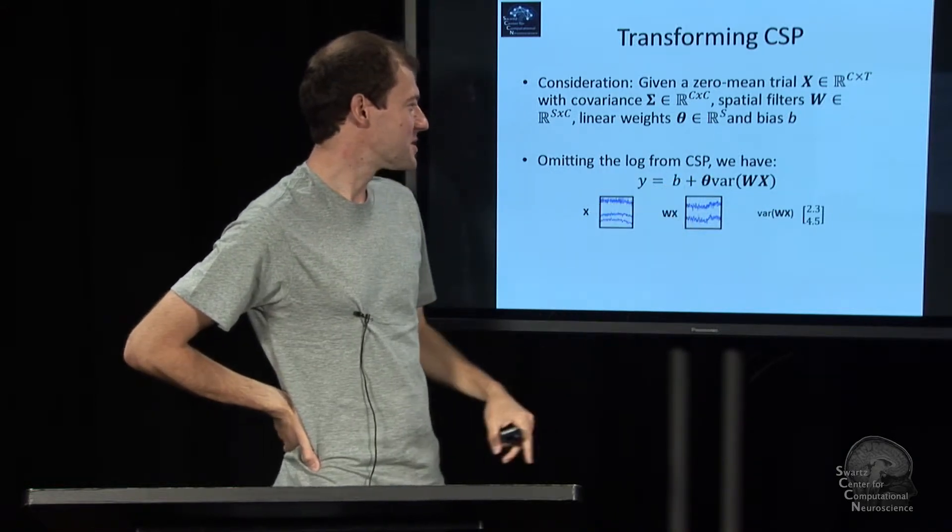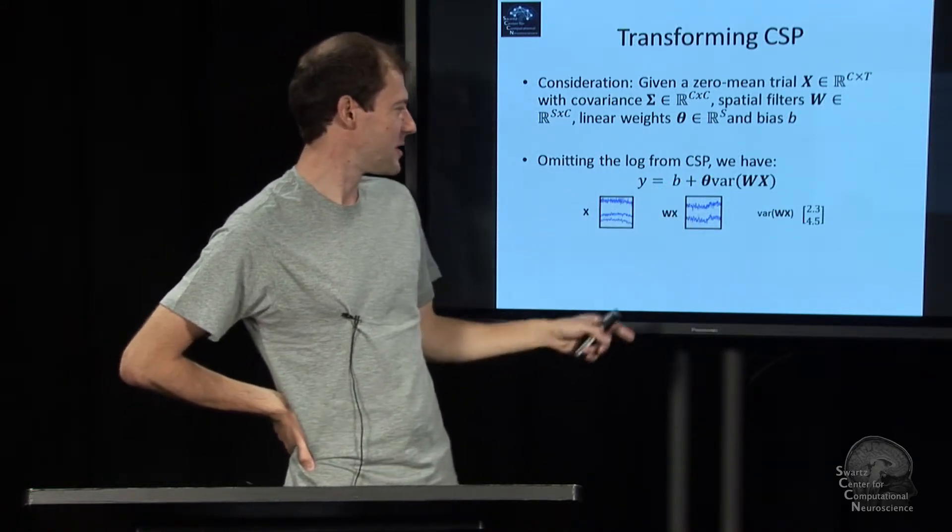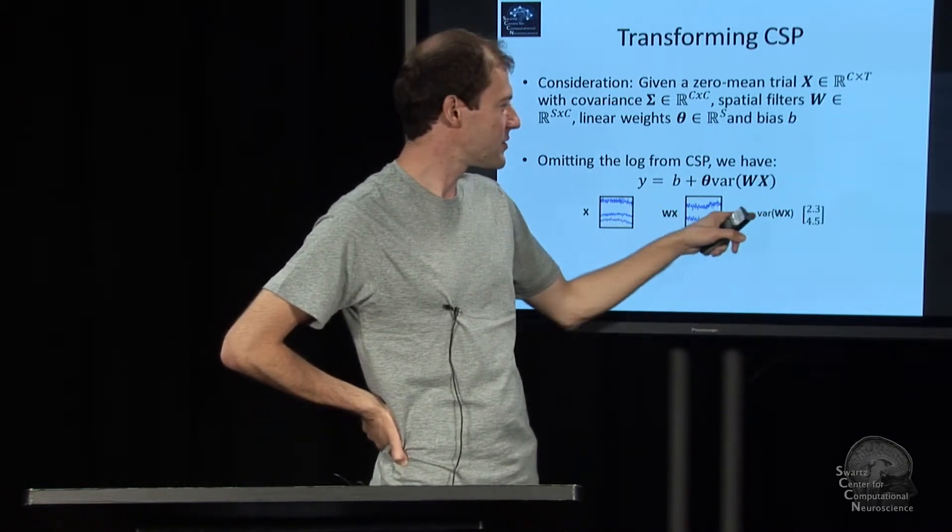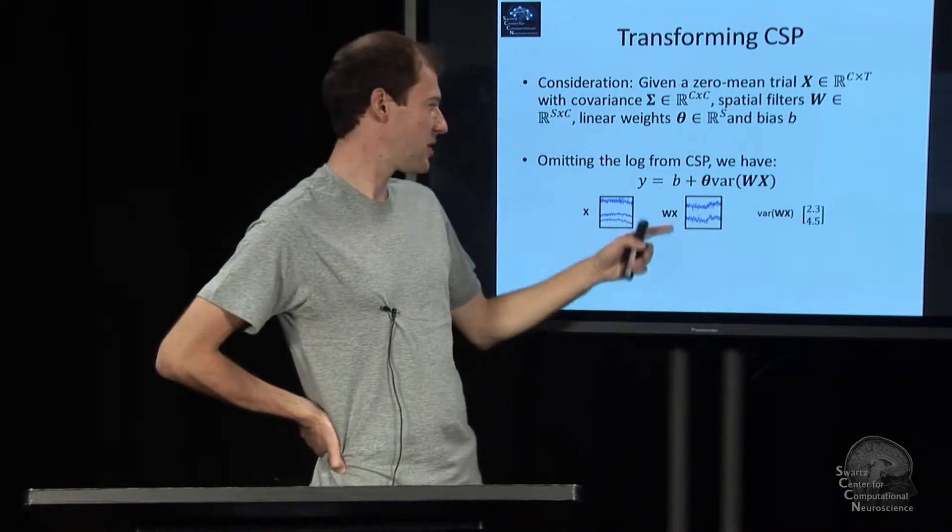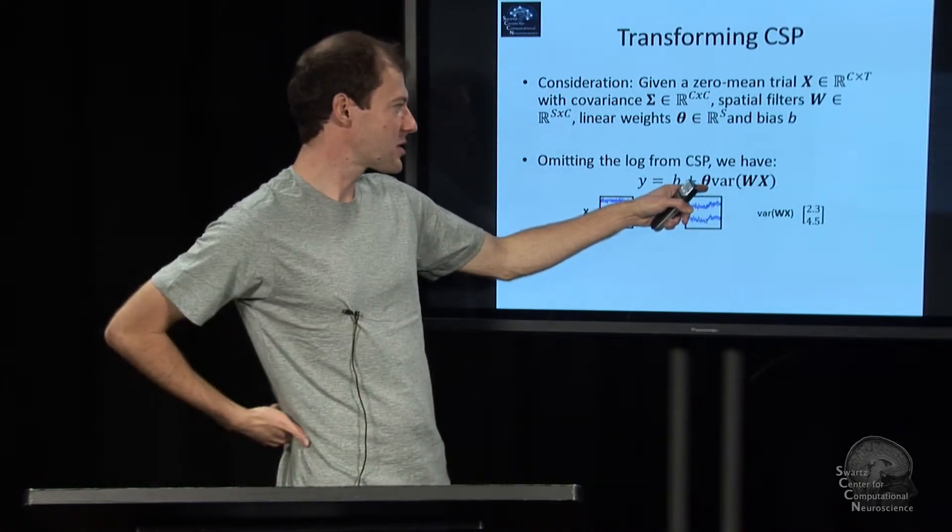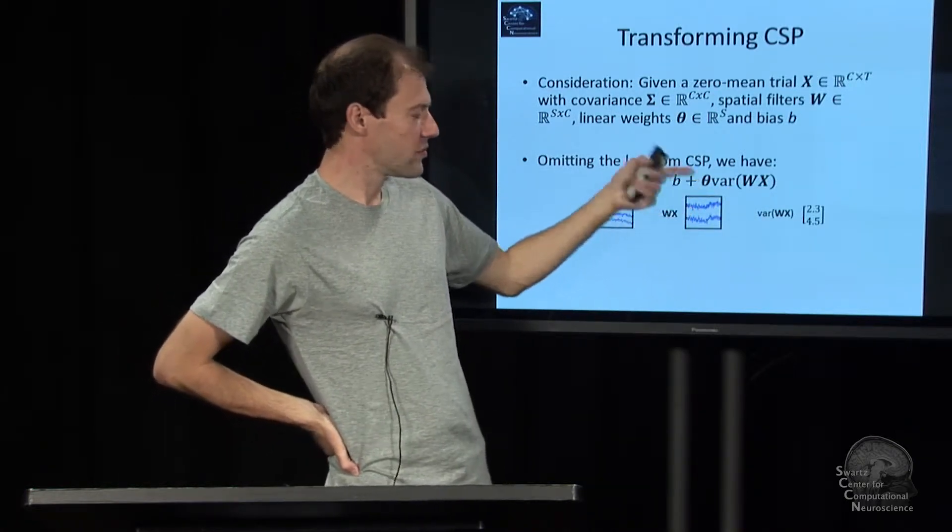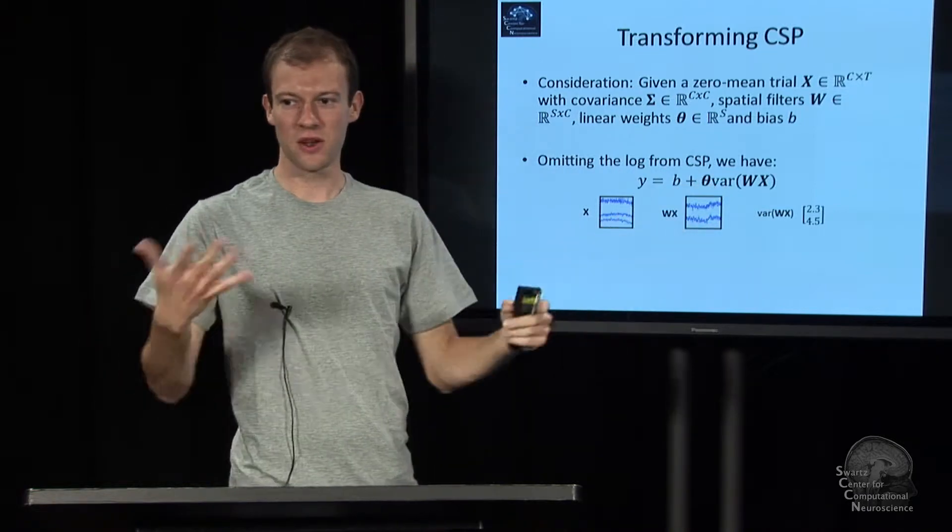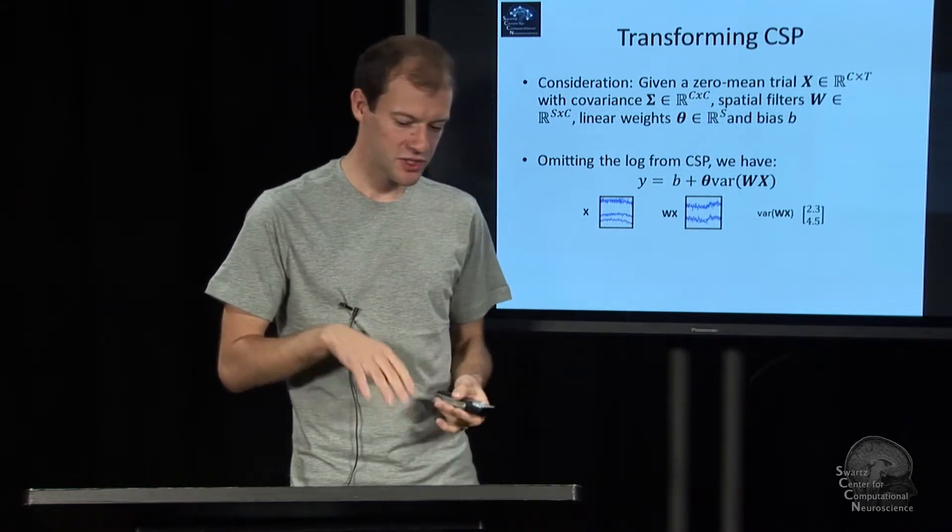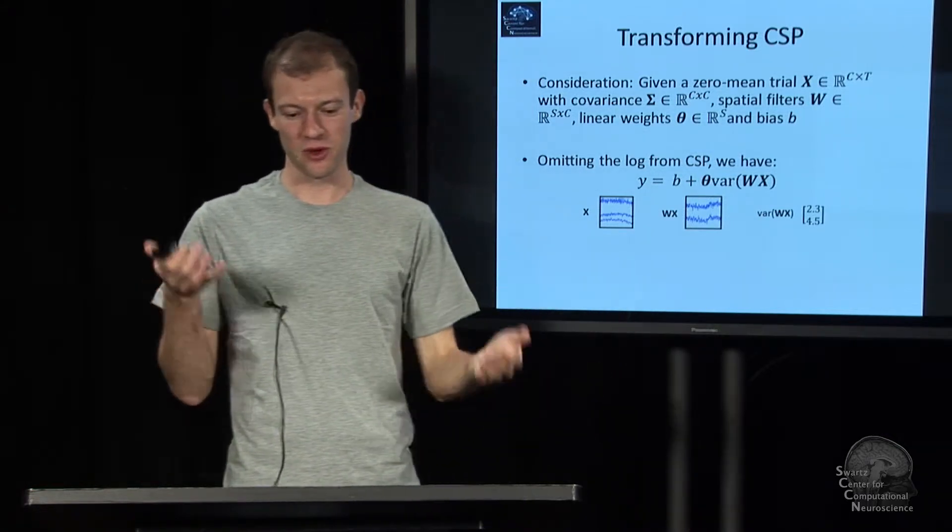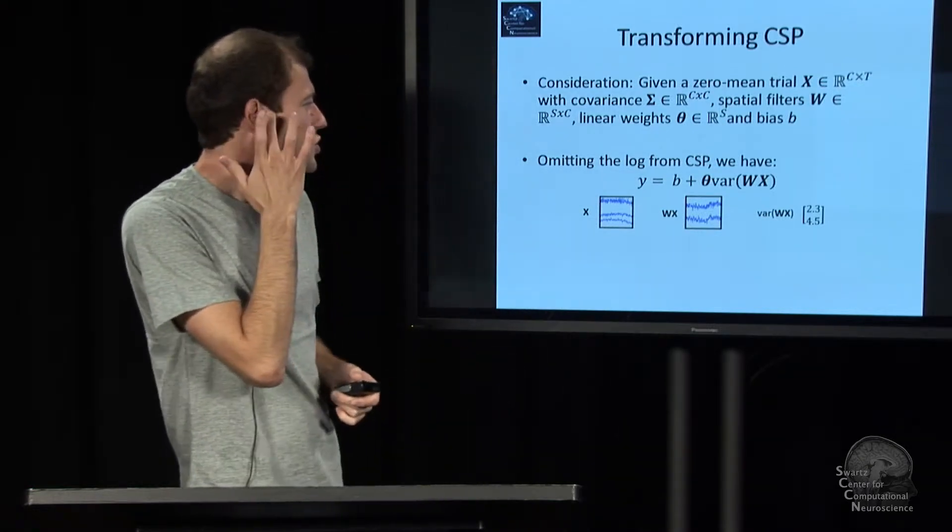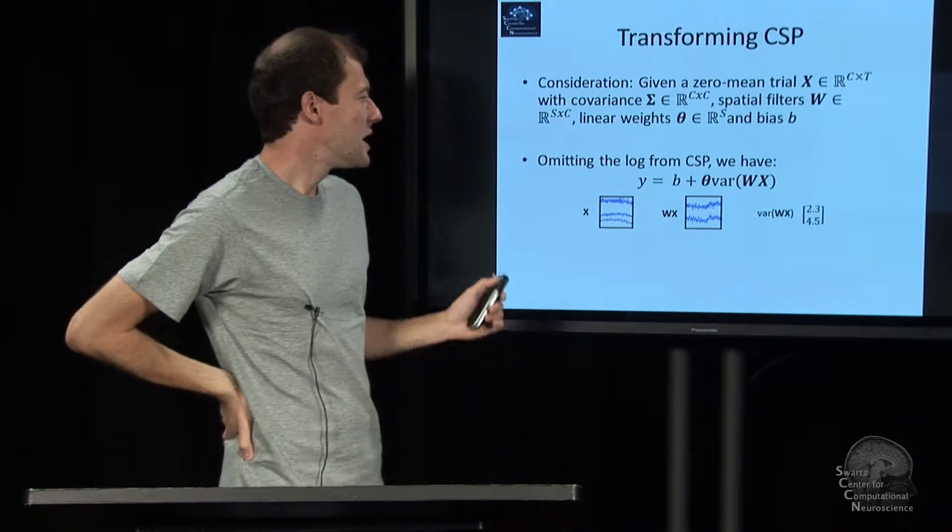X is a matrix, number of channels by number of time points. W times X is still a matrix, number of sources times number of time points. Variance of that is a K element vector. This is our weight vector, so the inner product between these two is a scalar, plus b. That's the final prediction, a scalar output that's negative on one side of the hyperplane or negative on the other side.